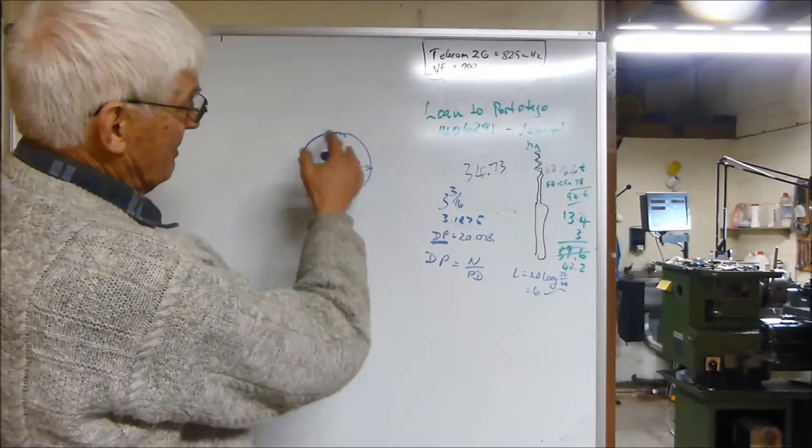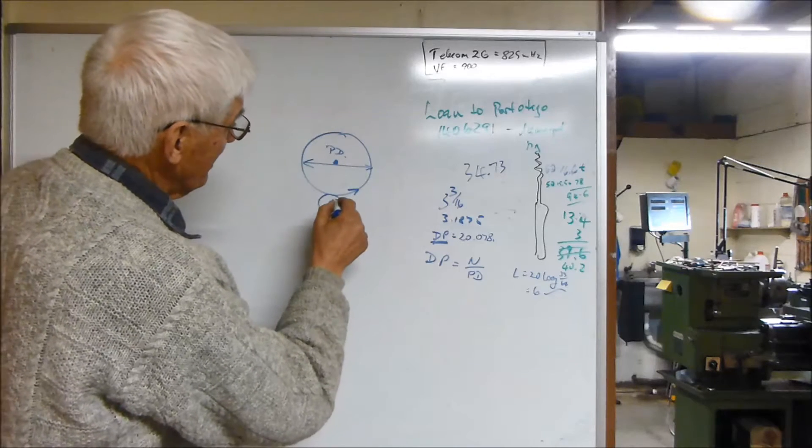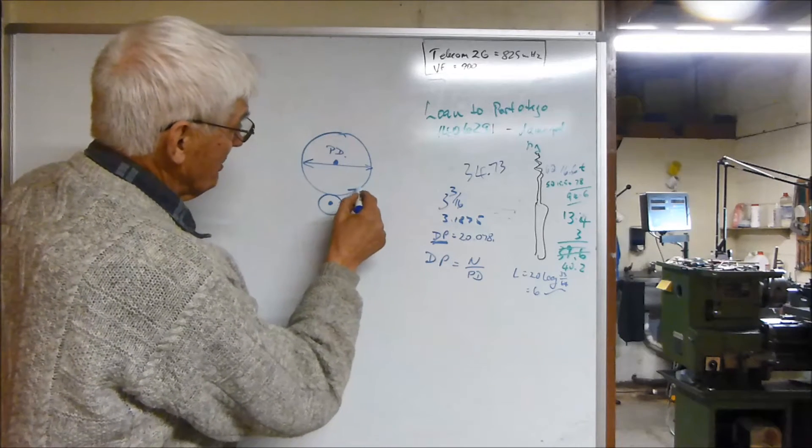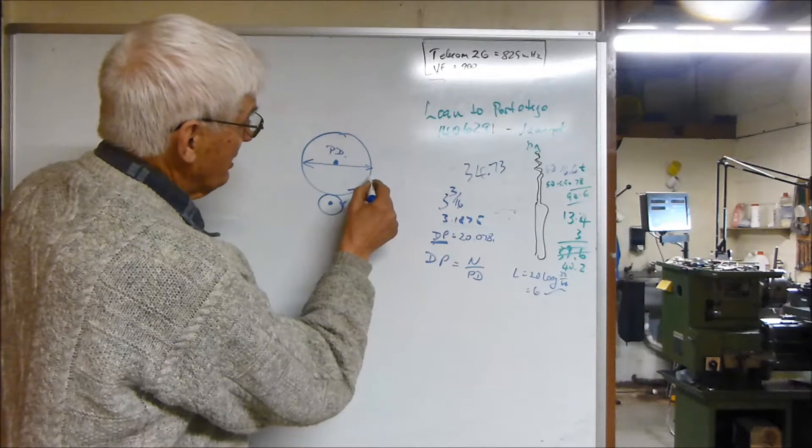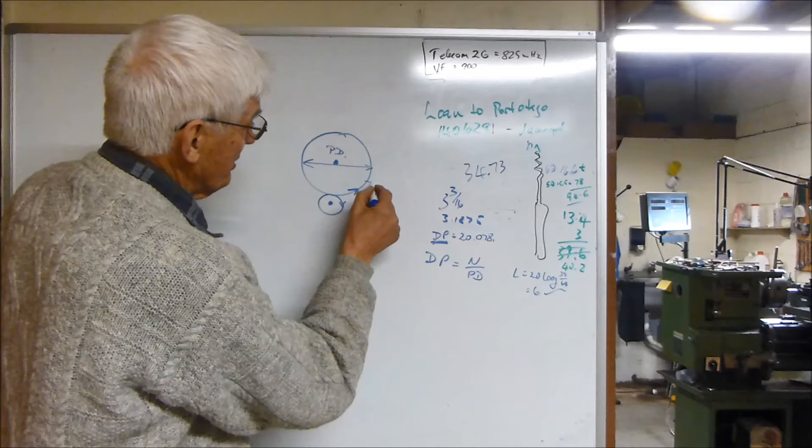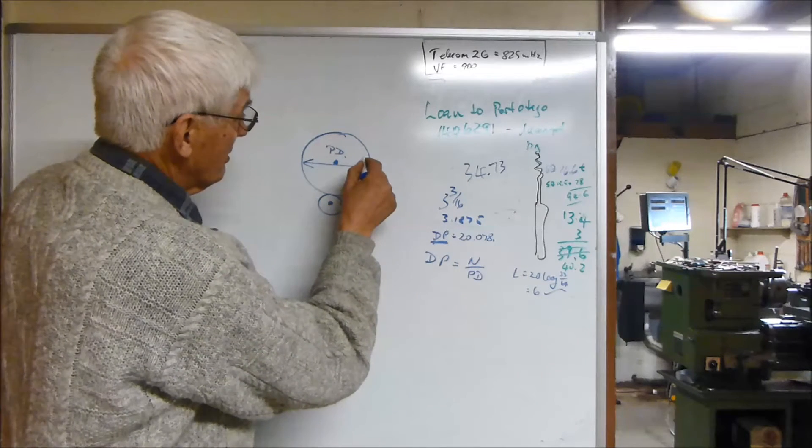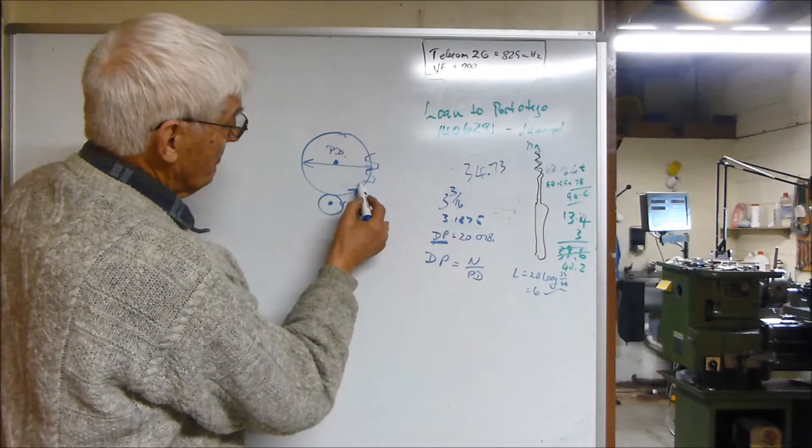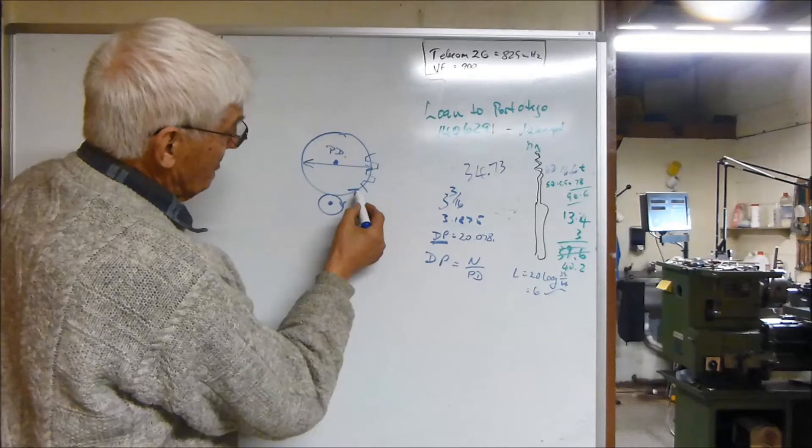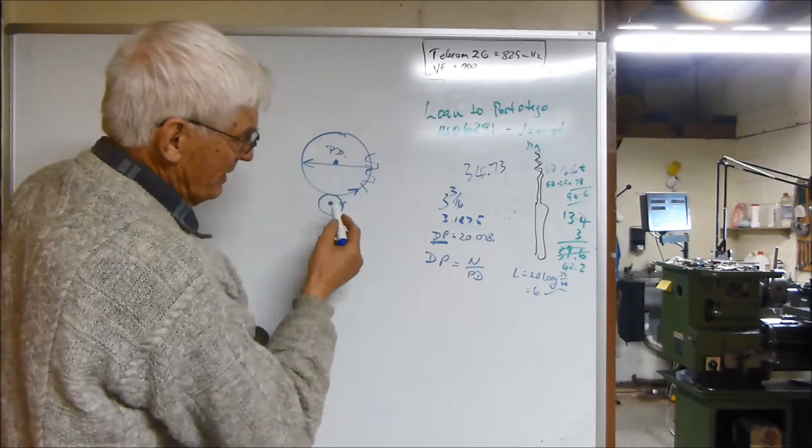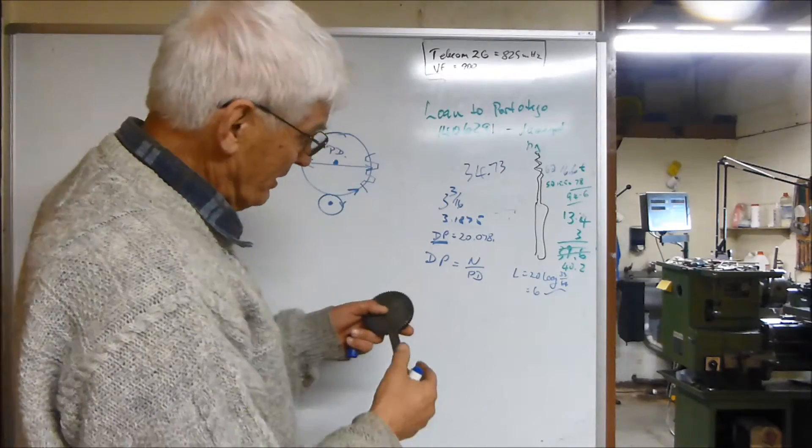Obviously we can't make a gear like that, it needs teeth on it, and so the teeth have to extend inside and outside of that line. The teeth shape is a bit like that. The pitch diameter is about halfway through the gap of the teeth.